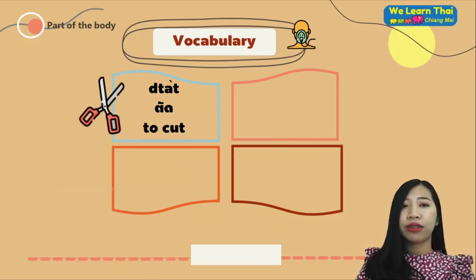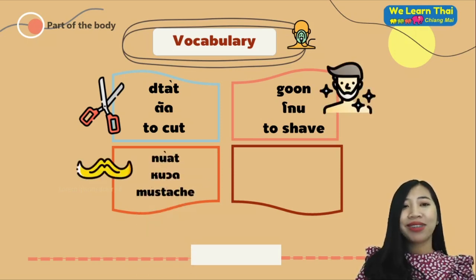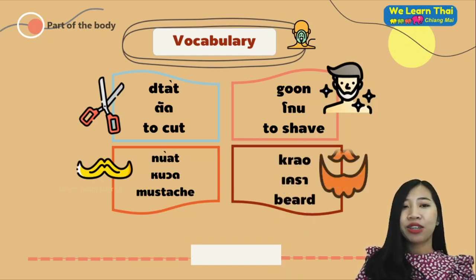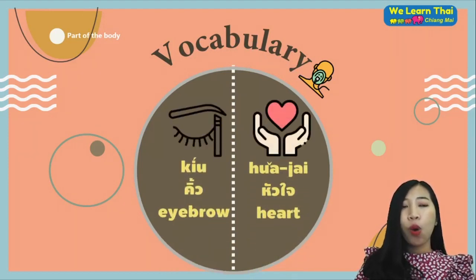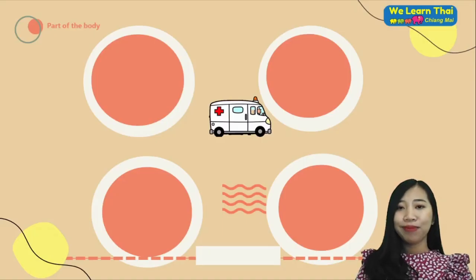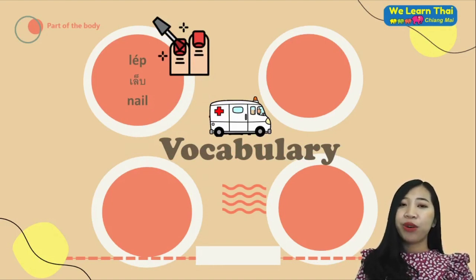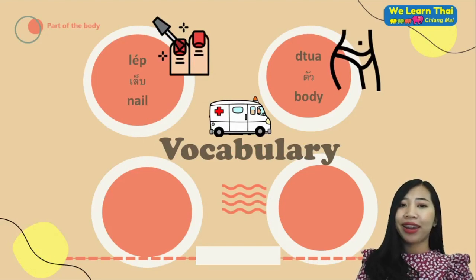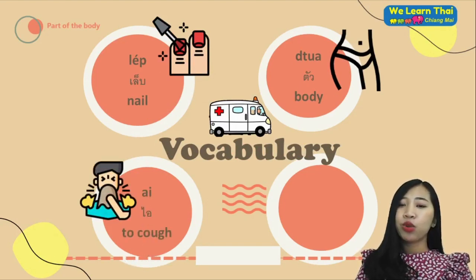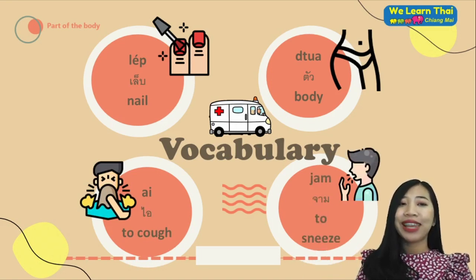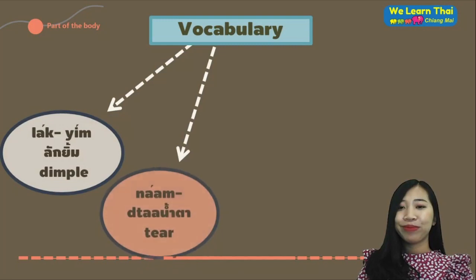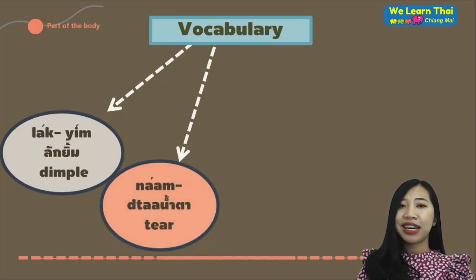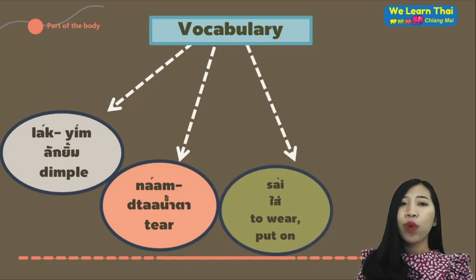More vocabulary: ตัด (to cut), โกน (to shave/shape), นวด (to massage), เครา (beard), คิ้ว (eyebrow), หัวใจ (heart or mind). Also: ซ้าย (left), เข่า (knee), ตัว (body), หนาว (cold), จาม (to sneeze), ลักยิ้ม (dimple), น้ำตา (tear), ใส่ (to wear or put on), ถอด (to take off).